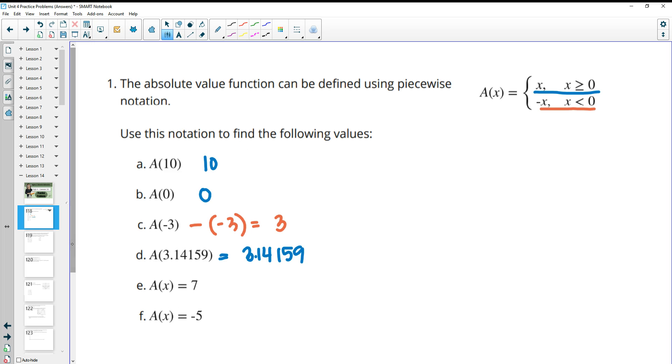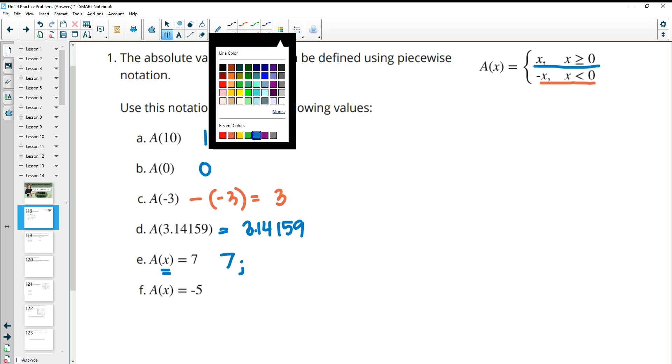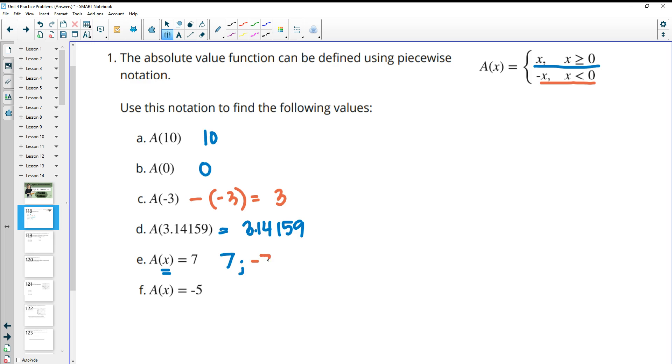In order for the function to equal 7, what would the input have to be? So what could we put in to the function to get back 7? Well, we could have 7, which is greater than zero, and then would kick back 7. We could also put in negative 7, which would plug into the bottom and kick back positive 7 as well.